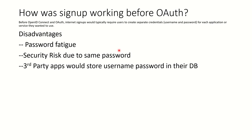Before OpenID and OAuth, internet sign-ups typically required users to create separate credentials for each website they used. Imagine having 10 different websites where you want to sign up — with no identity providers and no OAuth, you would suffer from password fatigue, having to remember 10 different passwords. Or if you used the same password on every website, you'd create a security risk: if one website's database of user credentials was leaked, attackers could use those same credentials everywhere else.